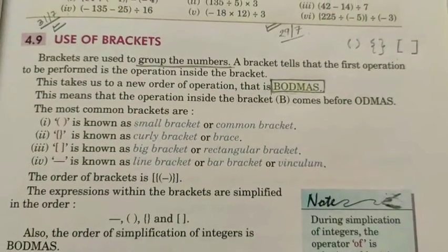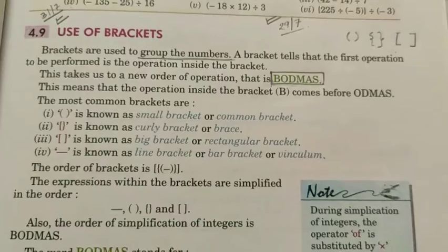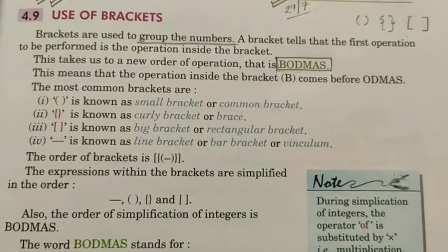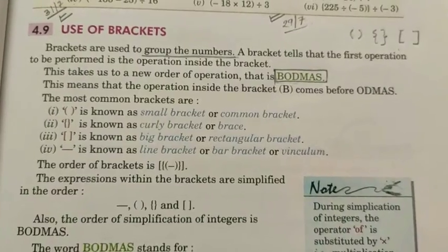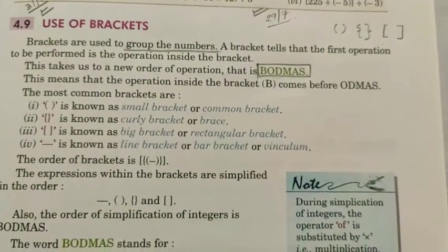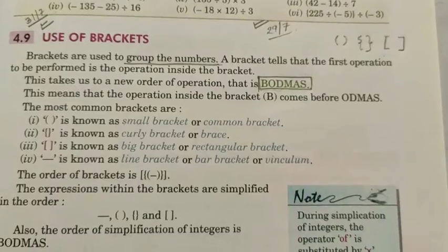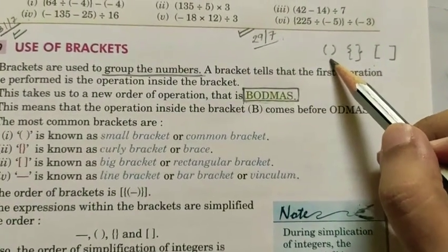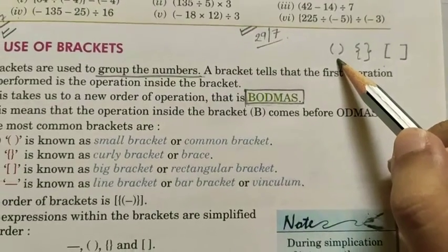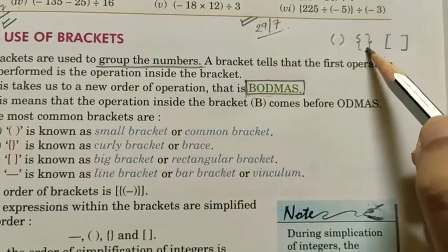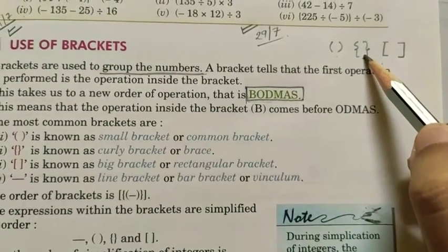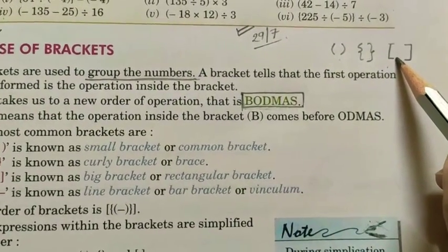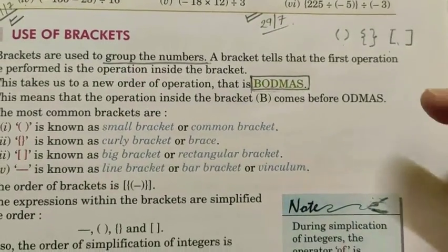Today we will learn about the use of brackets — how can we use brackets in our mathematical operations. That is our today's topic. Basically, brackets are of three types. This one is the small bracket or first bracket. This one is the curly bracket or second bracket, and this one is the big bracket or third bracket.